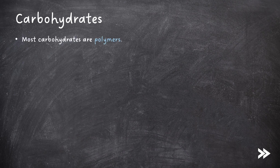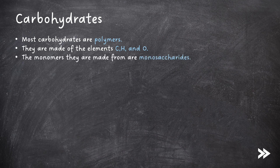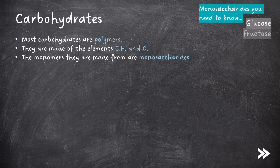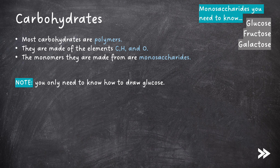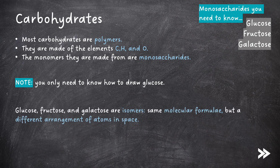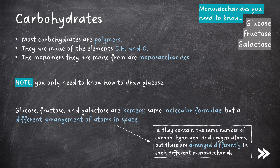Most carbohydrates are polymers. They are made of the elements C, H and O. The monomers they are made from are monosaccharides. There are three types of monosaccharide that we need to know: glucose, fructose and galactose. Note that you only need to know how to draw glucose. Glucose, fructose and galactose are isomers, which means that they have the same molecular formulae but a different arrangement of atoms in space — i.e. they contain the same number of carbon, hydrogen and oxygen atoms, but these are arranged differently in each different monosaccharide.